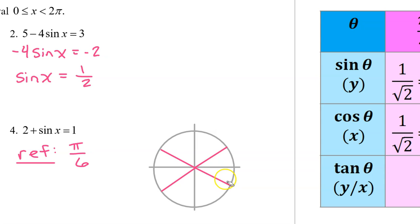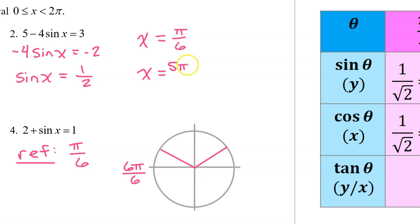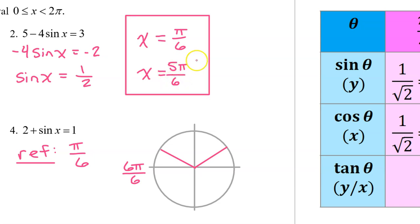On the interval from 0 to 2π, here are the 4 angles with a reference angle of π/6. Since we want sine to equal positive 1/2, we will stick to quadrants 1 and 2 where the y-value and thus the sine function is positive. The angle in the first quadrant with a reference angle of π/6 is π/6 itself. We can think of π as 6π/6, so this angle in the second quadrant is 5π/6. These are the two solutions on the interval from 0 to 2π.